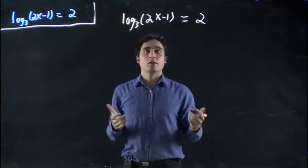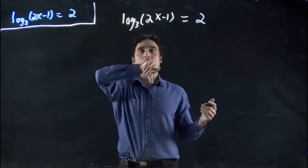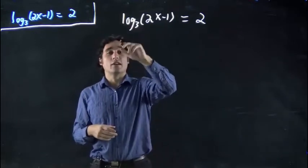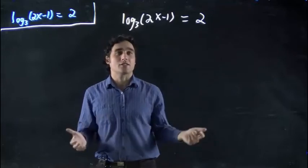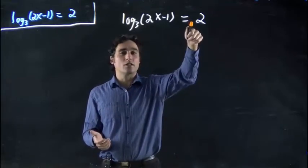So before when we had log into the same base on both sides, we saw that we just put exponent of the base to both sides. So what I mean, well to get rid of log 3, if I use 3 to the power of log 3 it cancels. We can still do that in this case even though I don't have log 3 over here.